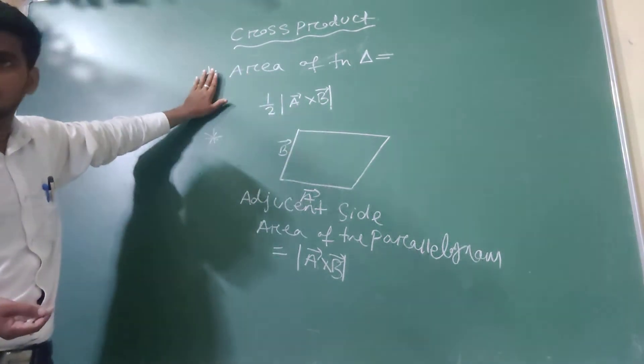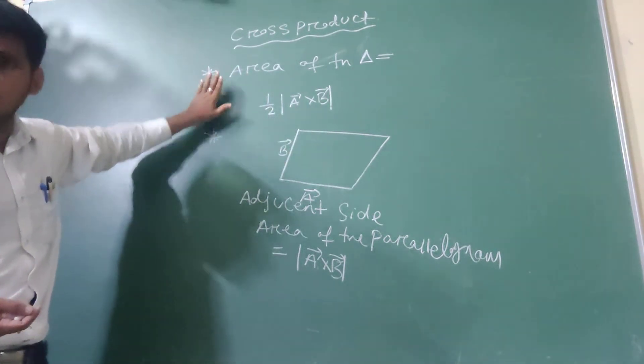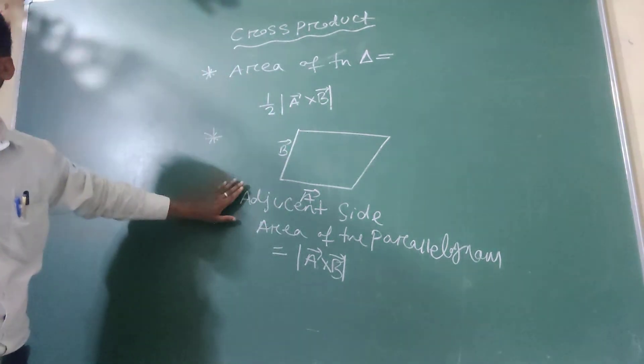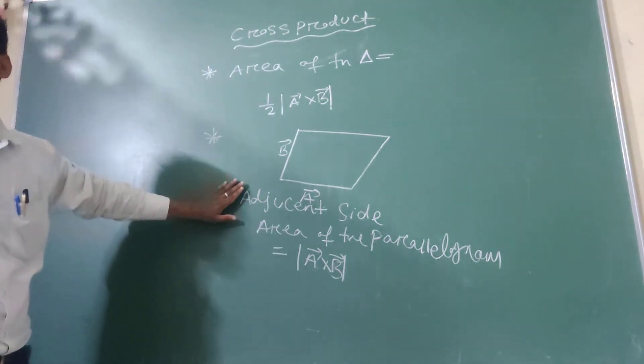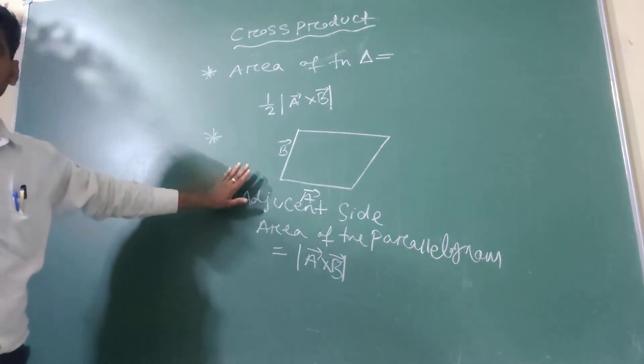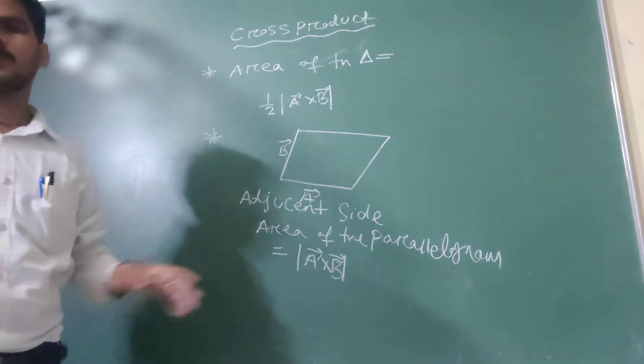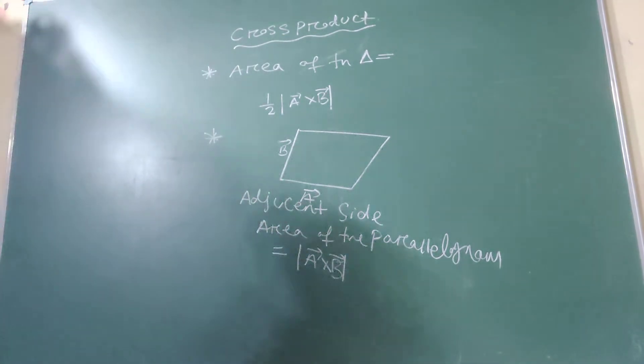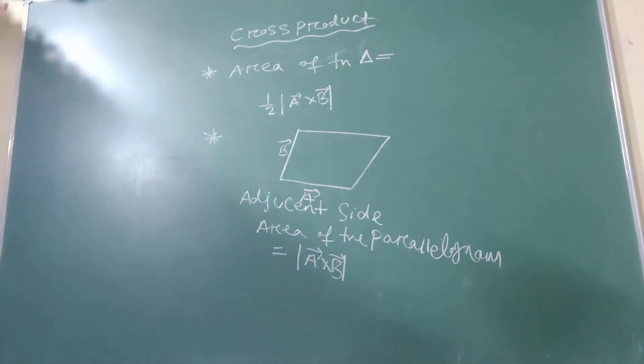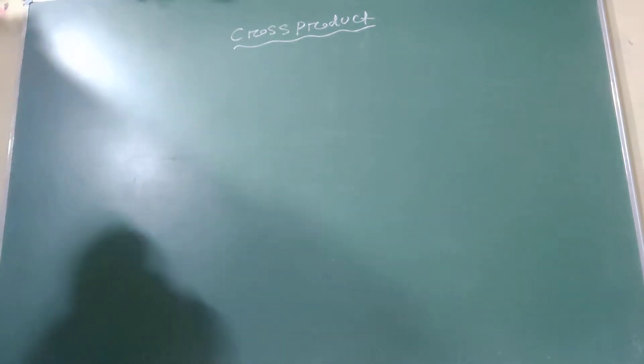Number one: Area of the parallelogram. The area of the parallelogram equals the magnitude of A vector cross B vector.